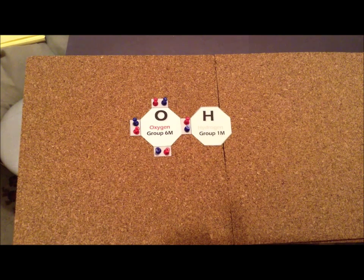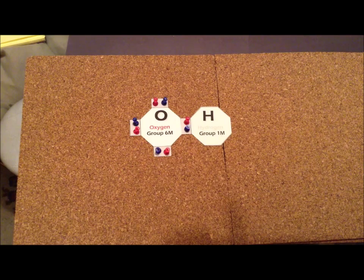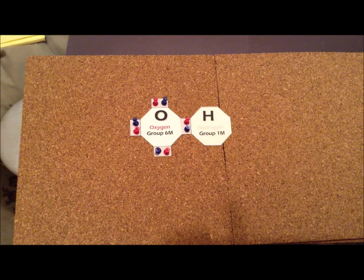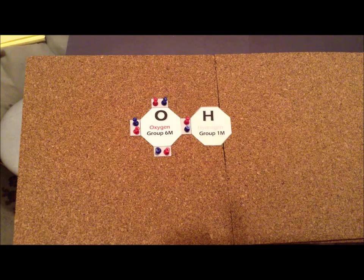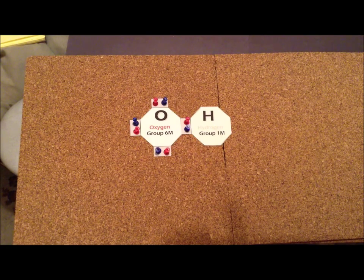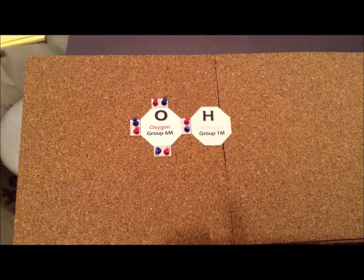Not only can we model compounds with Lewis dot structures, we can also model ions. So in this case, we have an important ion called hydroxide, sometimes referred to as OH minus.